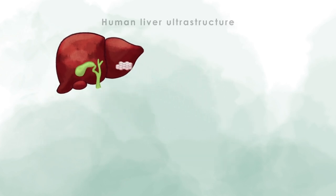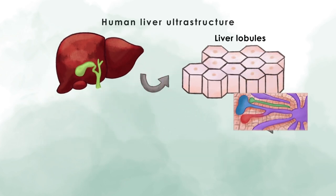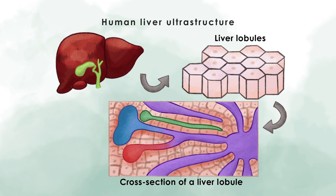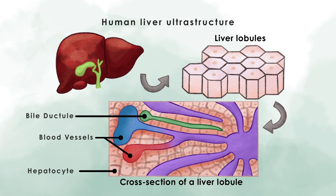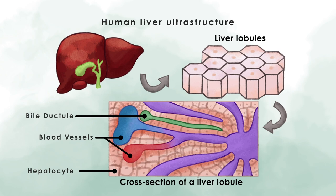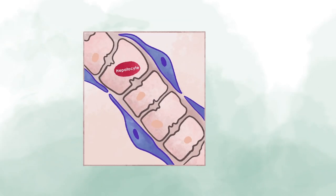When we zoom onto the fine structure of the liver, we can see that the major population found here are the hepatocytes. Each lobe consists of many lobules. These are almost hexagonal structures that are built up by hepatocytes, blood vessels, and also bile ducts. In addition to hepatocytes, we can also find an active population of immune cells.